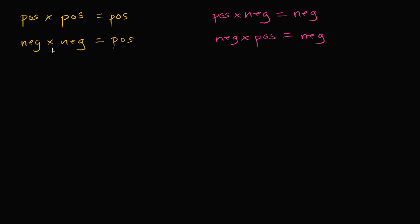A negative divided by a negative is positive; a negative divided by a positive would be negative. Now, all of these apply when we're only multiplying or dividing two things. But let's think about what happens if we multiply or divide three things, or four things, or five things, or n things together — what we might expect.